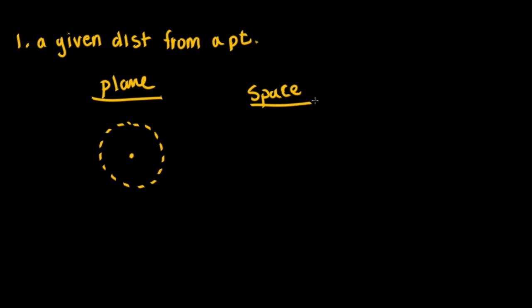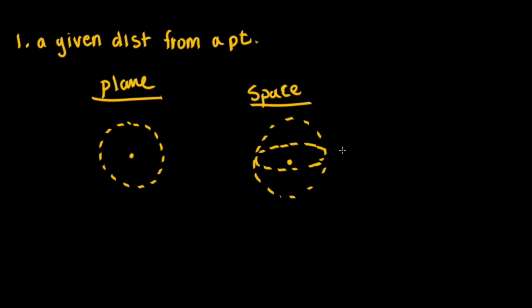Now in space, we have to remember that this is three-dimensional. So we're still going to have a circle going all the way around. However, since we're three-dimensional, we're also going to have the locus of points going around horizontally. This is going to make a sphere. So a given distance from a point in a plane is a circle, and the given distance from a point in space is a sphere.